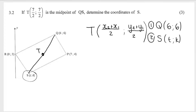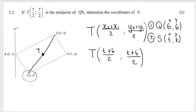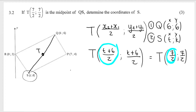I've just randomly labeled my coordinates. X2 is T, Y2 is K, X1 is 6, Y1 is 6. So: X2 plus X1 divided by 2 gives us T plus 6 over 2, and Y2 plus Y1 divided by 2 gives us K plus 6 over 2. I know that these are each equal to 7 over 2. So I'm going to take T plus 6 over 2, make it equal to 7 over 2, and solve.